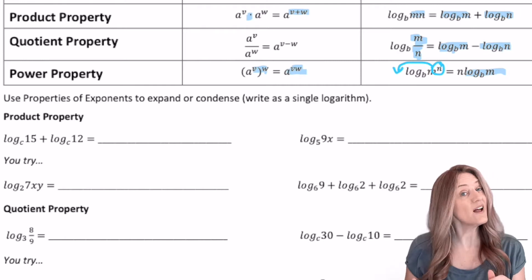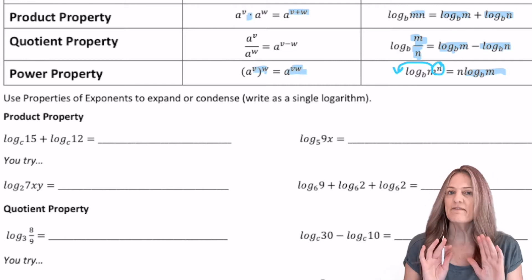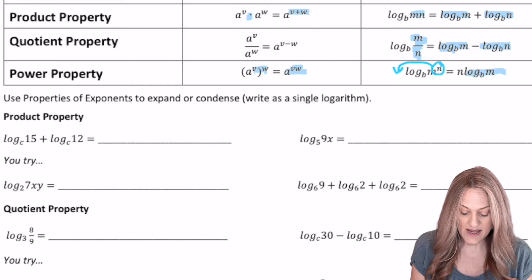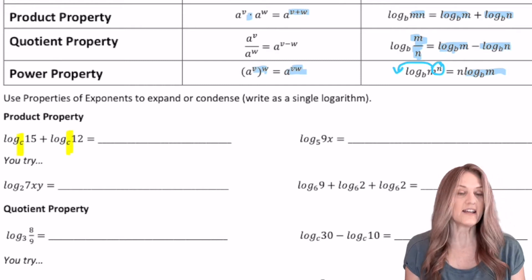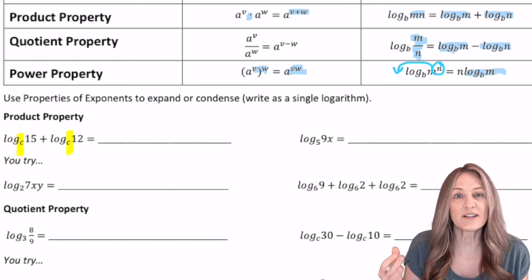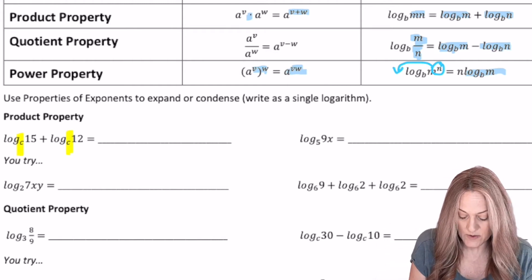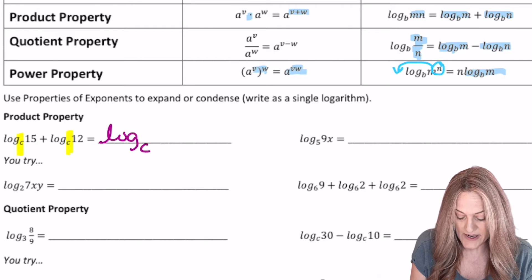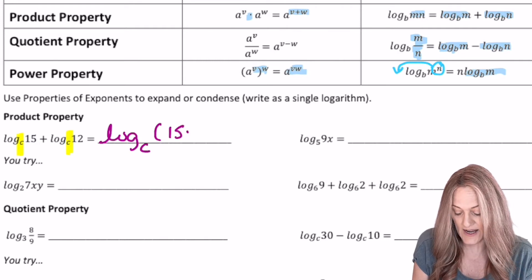So in the first one, we see log base c of 15 plus log base c of 12. Verify that the base is the same. And if it is, let's see, adding two exponents, well, that's originally multiplying. So my final answer on this one, I condense to log base c of 15 times 12.